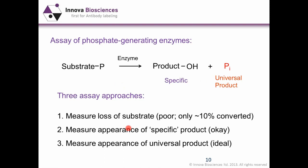Turning to assays for phosphate-generating enzymes: essentially an enzyme acts on a substrate which has a phosphate, to create a dephosphorylated product specific to that substrate. We also have a universal product, PI, which will be formed regardless of what the substrate is. There may be thousands of substrates, but they will all generate PI, while each will have a specific dephosphorylated product. So there are three approaches to performing an assay.